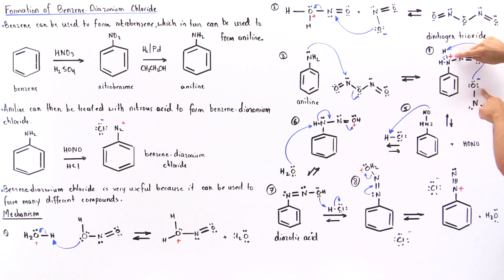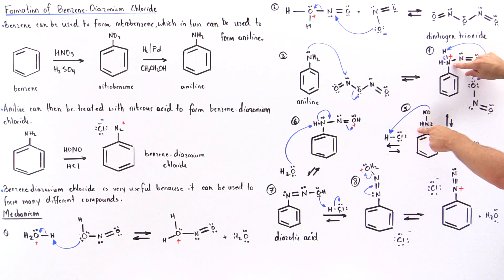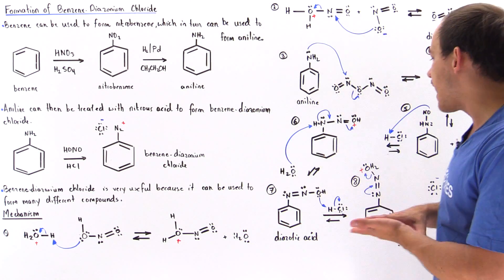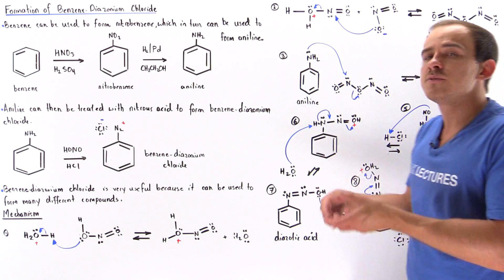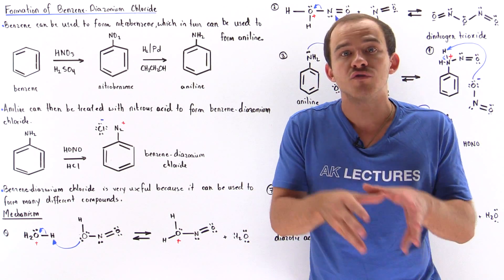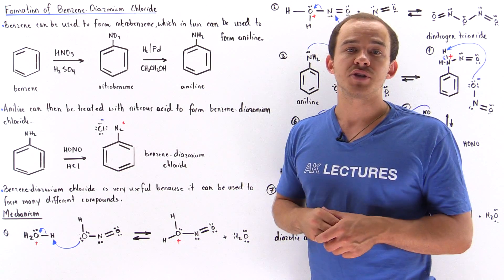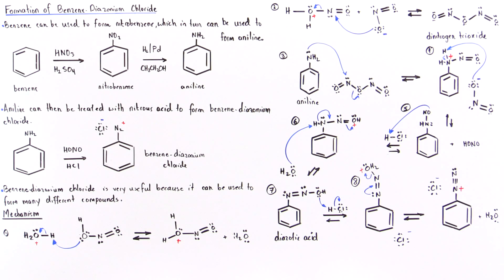Taking off this H removes the positive charge because those lone pair electrons now reside on the nitrogen. We form a molecule with one less H atom on the nitrogen, and we also form nitrous acid. Now, HCl floating around in our solution can be used to protonate the oxygen atom attached to our nitrogen. We want to remove that oxygen, so by converting it into water by adding H atoms, we can displace the water molecule.